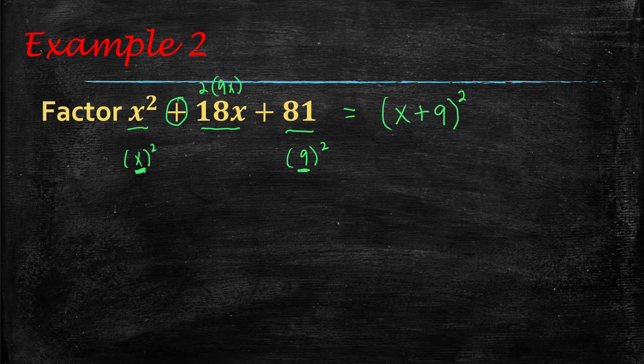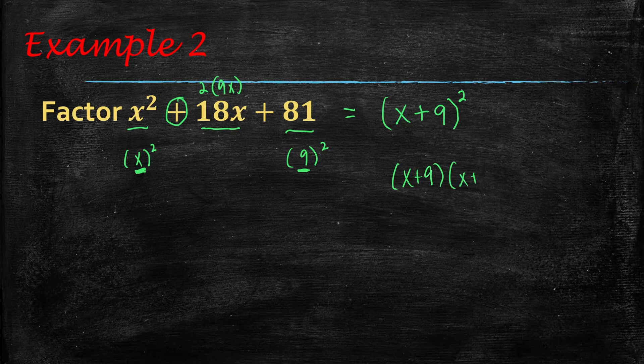Now again, if you don't trust me, let me show you that this does in fact equal that. If I have x plus 9 quantity squared, that's the same thing as x plus 9 times x plus 9. So let's multiply that.